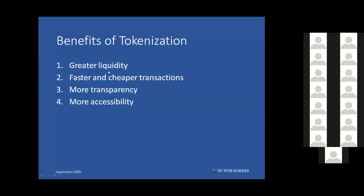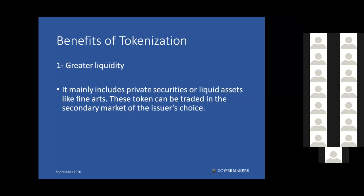The benefits of tokenization are: greater liquidity, faster and cheaper transactions, more transparency, and more accessibility. On liquidity: if you have real estate worth one million dollars, it's very difficult to find someone who can afford to buy it. Liquidity is a key issue. For assets like fine art, there may even be costs involved in evaluating the value of the asset.